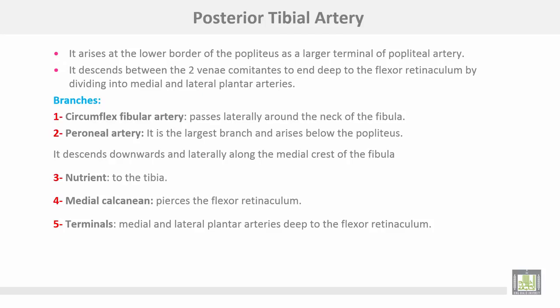The posterior tibial artery arises at the lower border of the popliteus, as the larger terminal of the popliteal artery. It descends between the two venae comitantes to end deep to the flexor retinaculum by dividing into medial and lateral plantar arteries. Branches include: the circumflex fibular artery, which passes laterally around the neck of the fibula; the peroneal artery, the largest branch, arising below the popliteus muscle, descending along the medial crest of the fibula and giving a nutrient artery to the tibia; and the medial calcaneal branch, which pierces the flexor retinaculum.